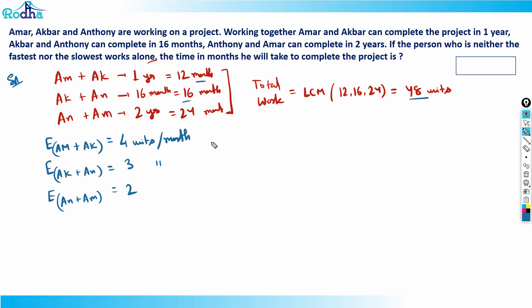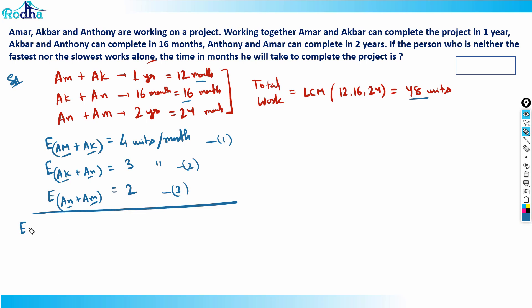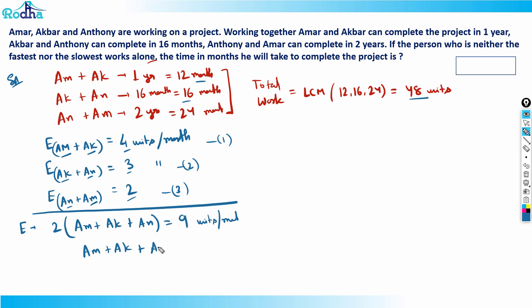Now I need to find the person who is neither the fastest nor the slowest, so I need individual efficiencies. I'll add all three equations. Since Amar, Akbar, and Anthony each appear twice, adding gives: 2 × (Amar + Akbar + Anthony) = 4 + 3 + 2 = 9 units per month. So Amar + Akbar + Anthony = 9/2 = 4.5 units per month.